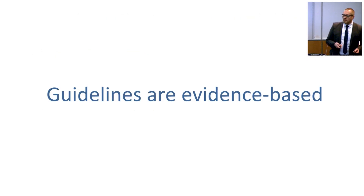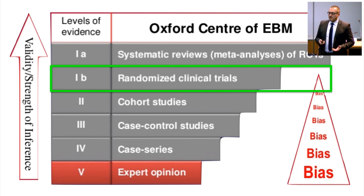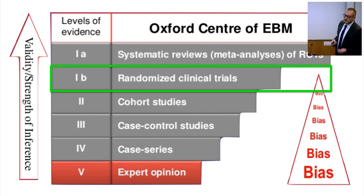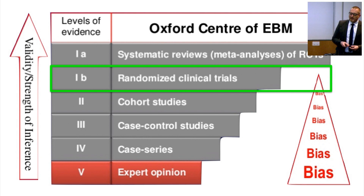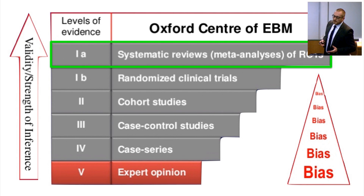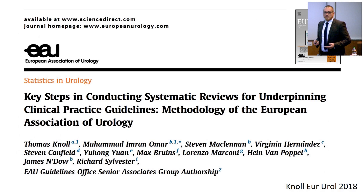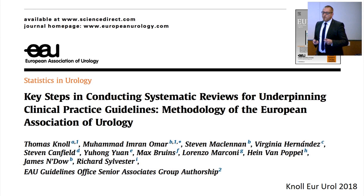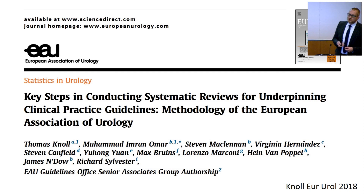Guidelines are evidence-based, and the evidence — as you know — is usually classified after the Oxford EBM classification. You have the highly ranked 1B randomized trials, and above these are the systematic reviews where meta-analyses are done out of the randomized clinical trials — that is the highest level we can get. That is exactly what we do with the EAU; we have just published the steps on how we perform systematic reviews to create guidelines.